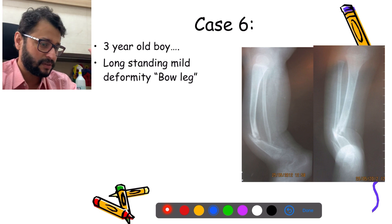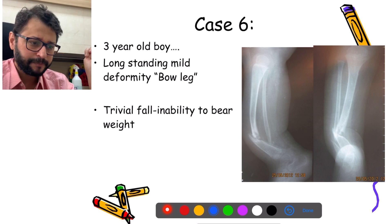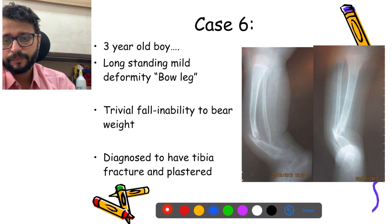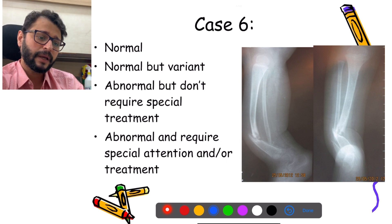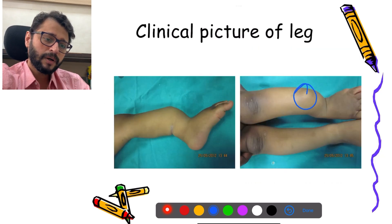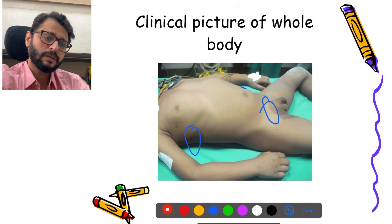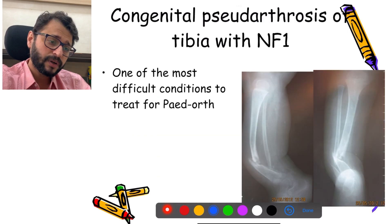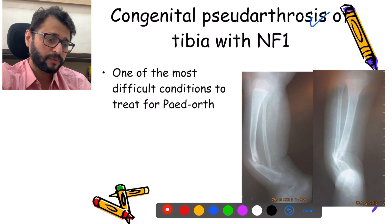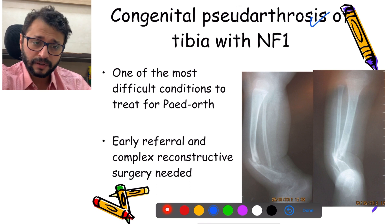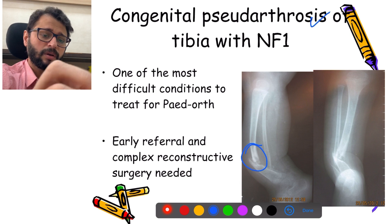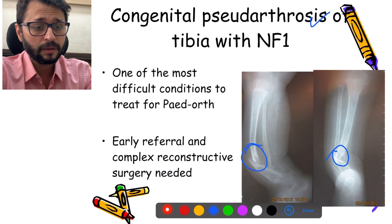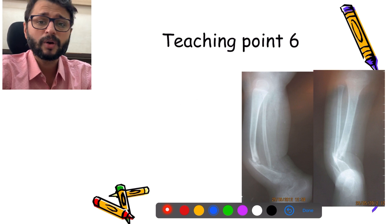Next case: a three-year-old boy with long-standing bow-leg deformity, trivial fall, and inability to bear weight. Diagnosed with tibial fracture and plastered, then sent for non-union. But look at the full clinical picture — the child has multiple café-au-lait spots, which are signs of neurofibromatosis 1 (NF1). This is congenital pseudoarthrosis of the tibia, one of the most difficult conditions to treat, requiring early referral and complex reconstructive surgery. Do not diagnose this as a traumatic non-union — look at the entire clinical picture, not just the x-ray.